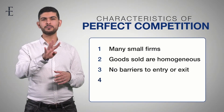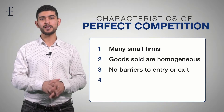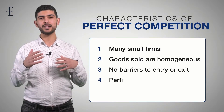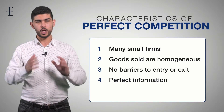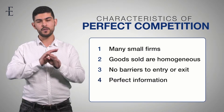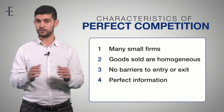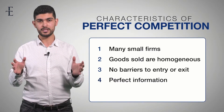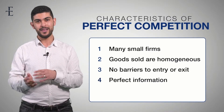Number four — pretty unrealistic — but number four is that there is perfect information. In other words, consumers and producers are both fully aware. The consumers know all the prices, the producers know all the prices, and they know that they know.